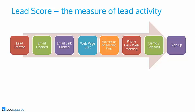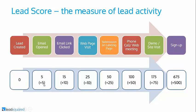Within LeadSquared you can associate weightage to each activity. As and when these happen, the score will keep adding to the lead. You will know that a lead is getting engaged, and among all your leads you'll be able to figure out which are most engaged by filtering on score. For example, you can associate a score like: 5 for email open, 10 for link click, 10 for web page visit, 25 for submission. Initially score is zero; after email open it becomes 5; after link click 15; after web page visit 25. Let me go to lead score settings in LeadSquared.